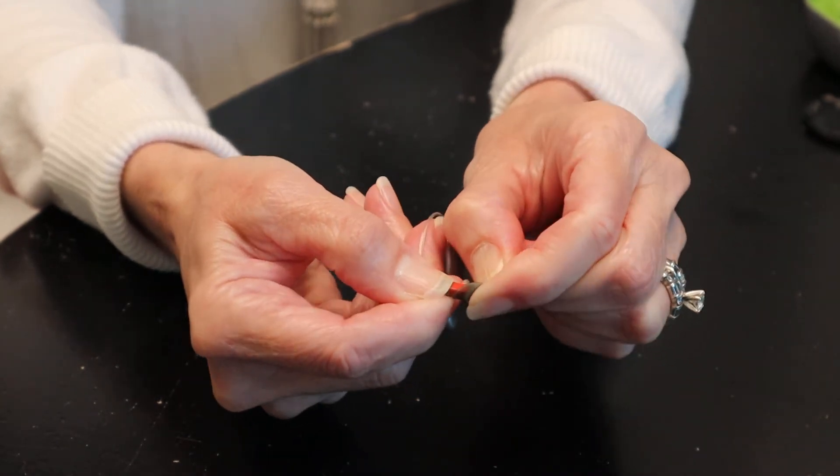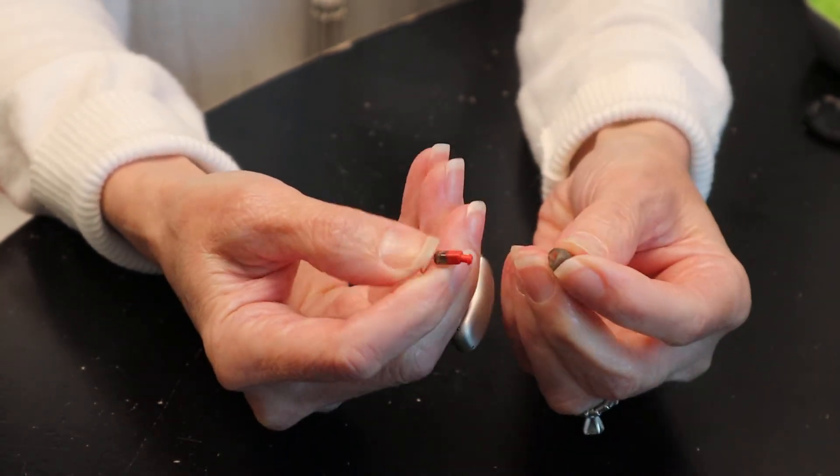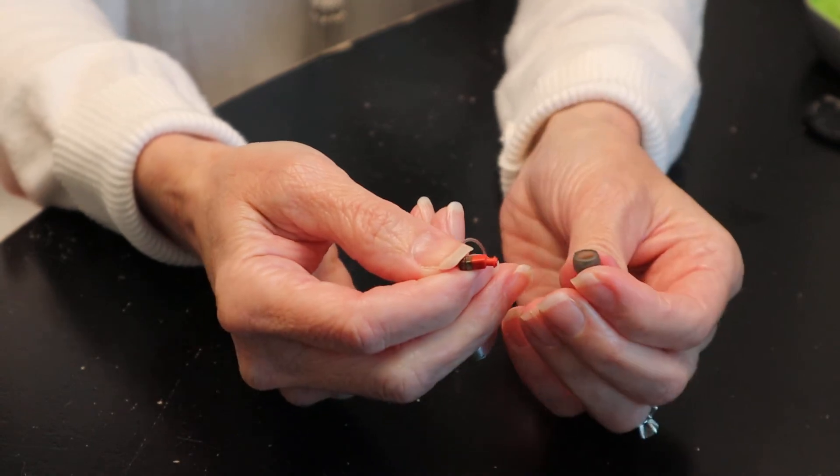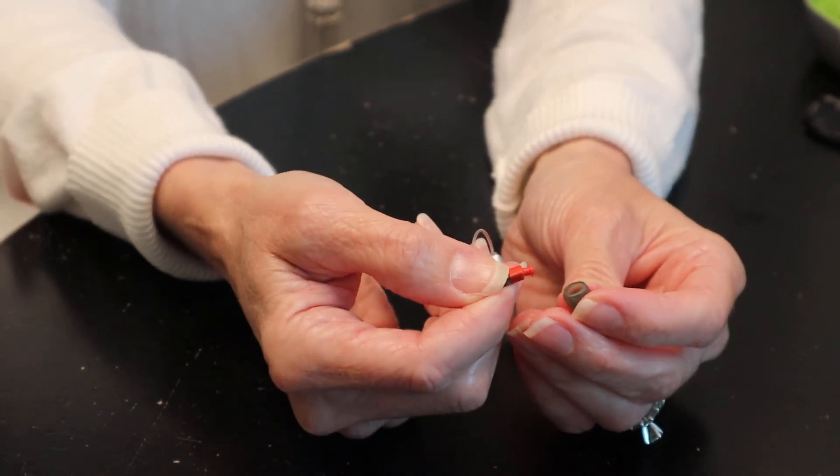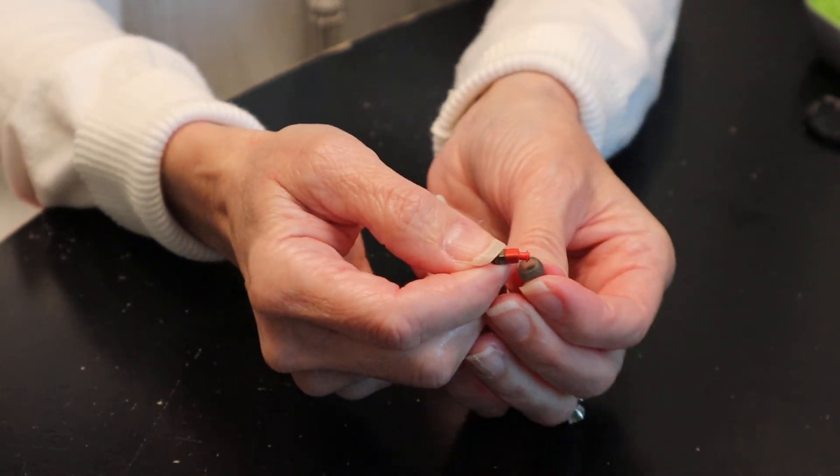Again, just peel it off with your fingernail. Sometimes they're difficult to remove, so if you tear the dome while removing it, that's fine. You're going to replace it anyway.